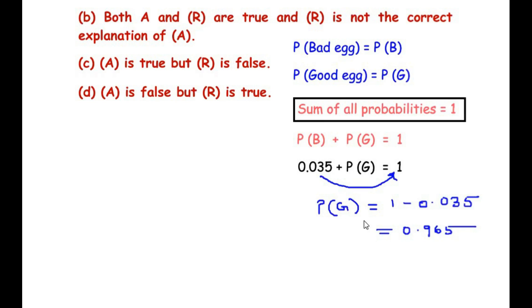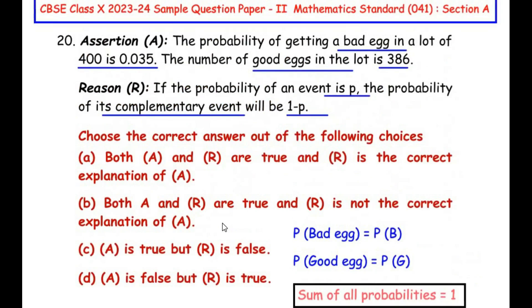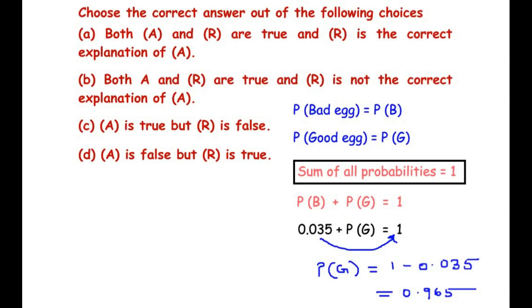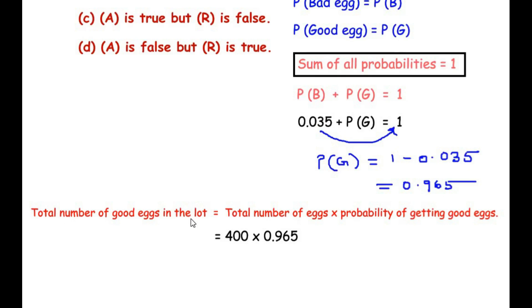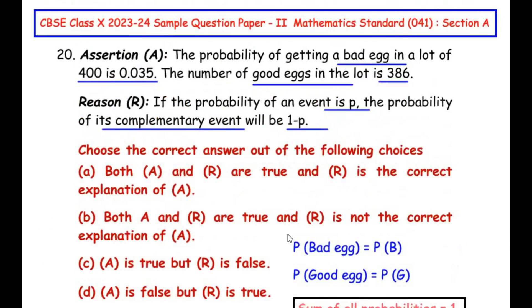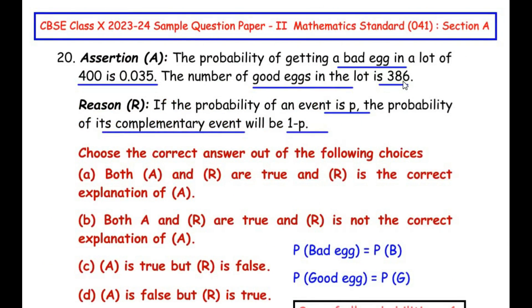Now we simply multiply the probability of a good egg by the total number of eggs in the lot, which is 400, and check whether the product gives 386. Total number of good eggs = 400 × 0.965 = 386, which is the same as the value given in the question. That means our assertion is correct.